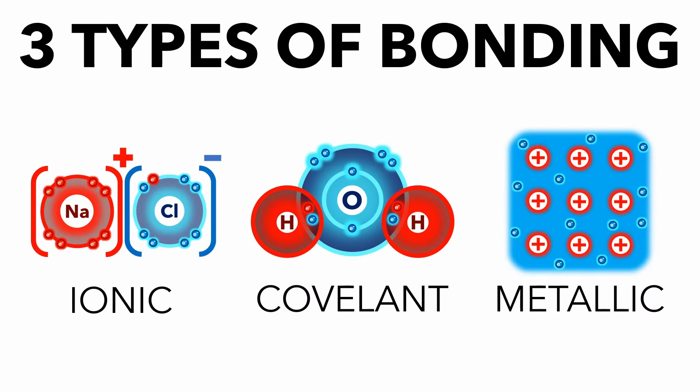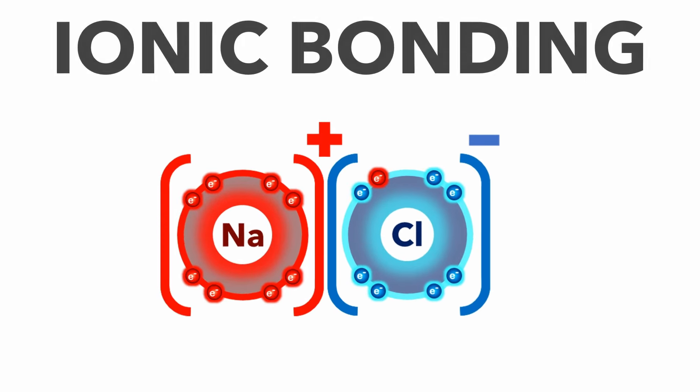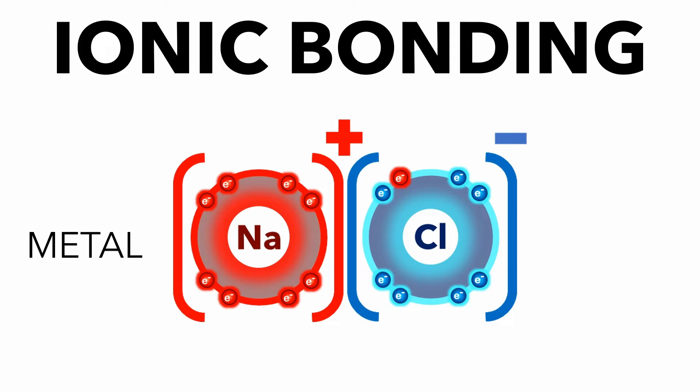This video explains how the three types of chemical bonding work. First, ionic bonding between metal and non-metal atoms, for example, sodium and chlorine.